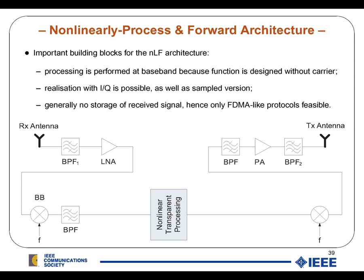If you do non-linear transparent processing, you should do that in the baseband, because these types of processes are mathematically designed for baseband and do not take the carrier into account. Therefore you need to bring your signal down to baseband, and you could also use I and Q branches and sampled versions of the signal. But generally, if you do the transparent type of architecture, you would not store the signal and hence only facilitate FDMA-like protocols.